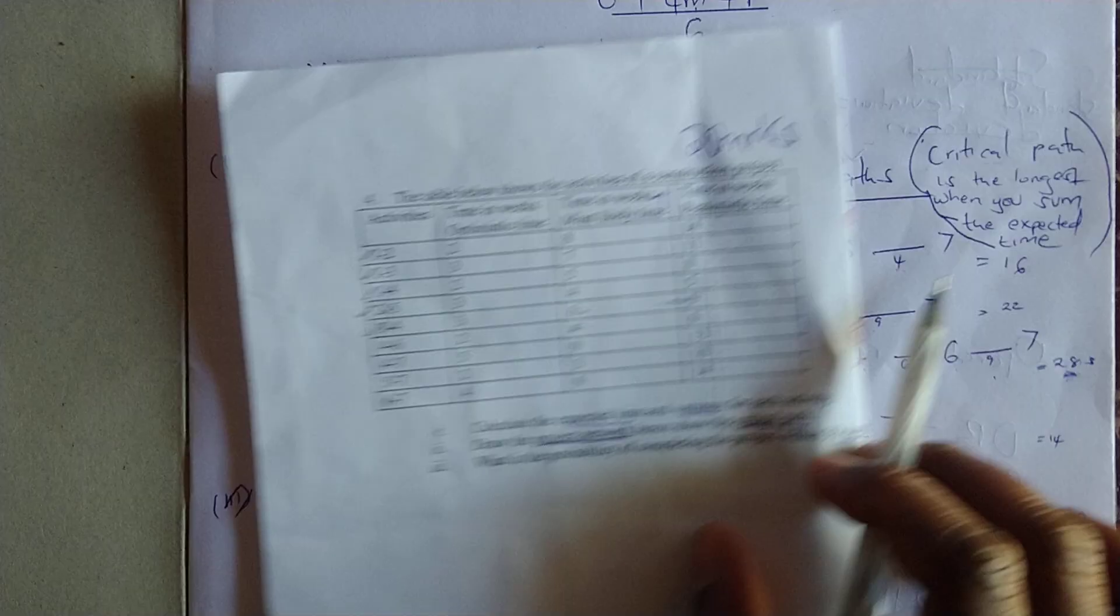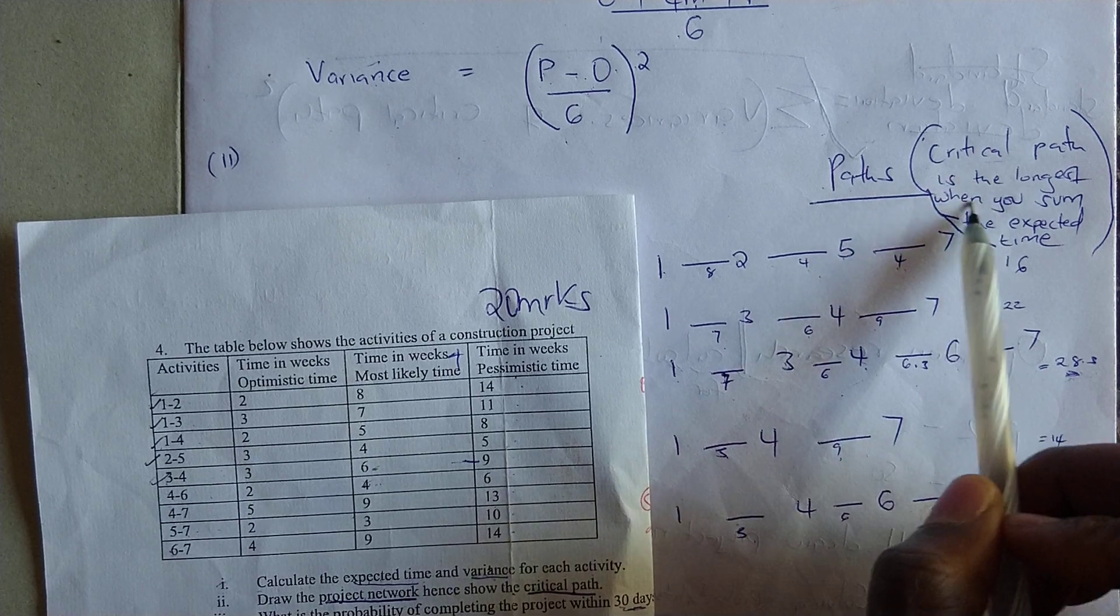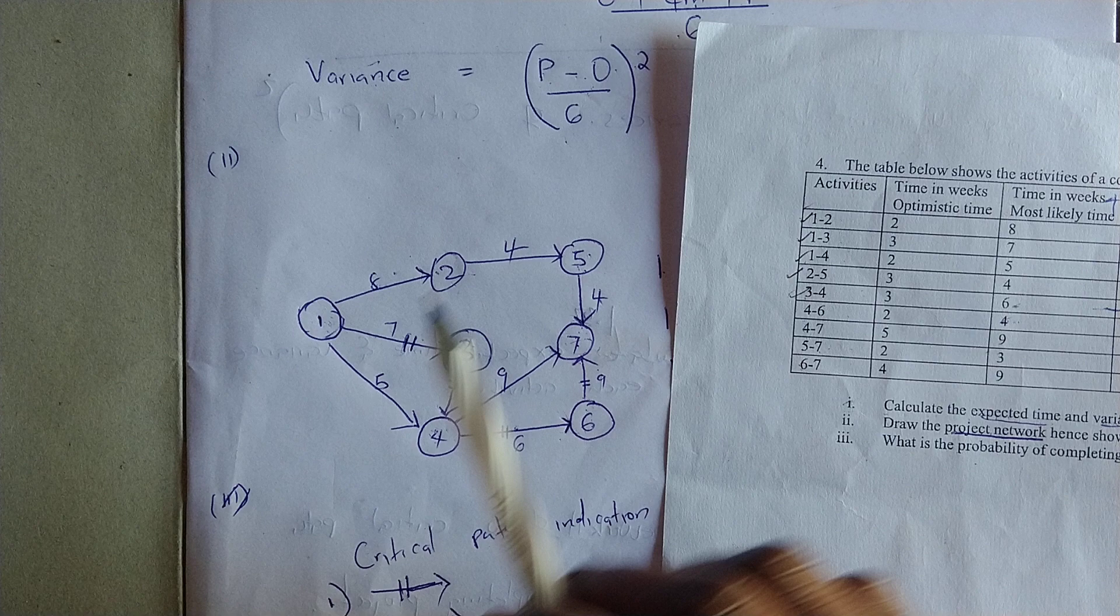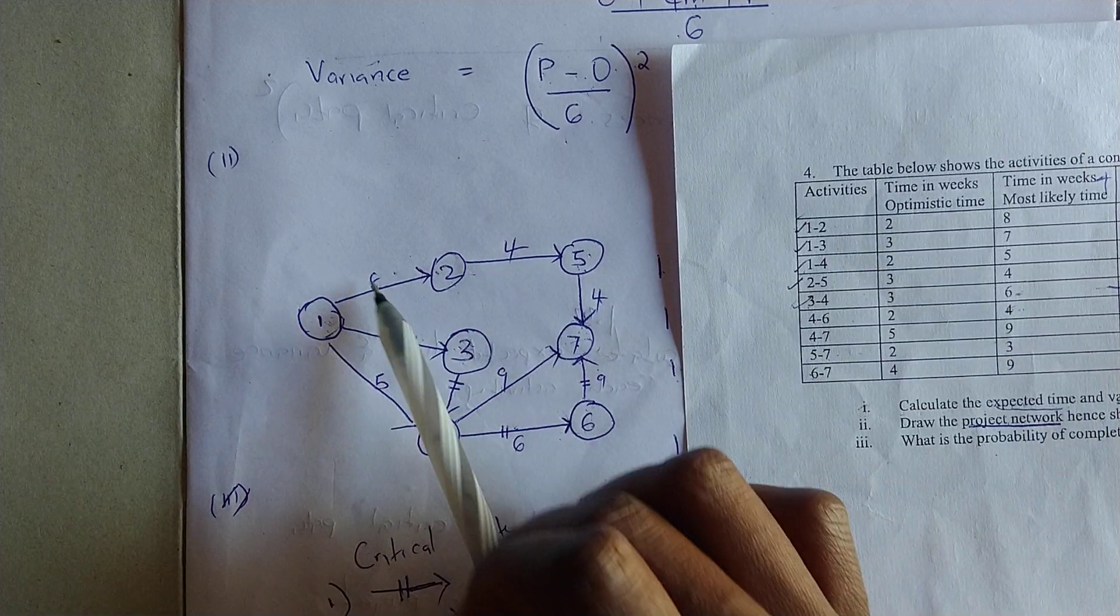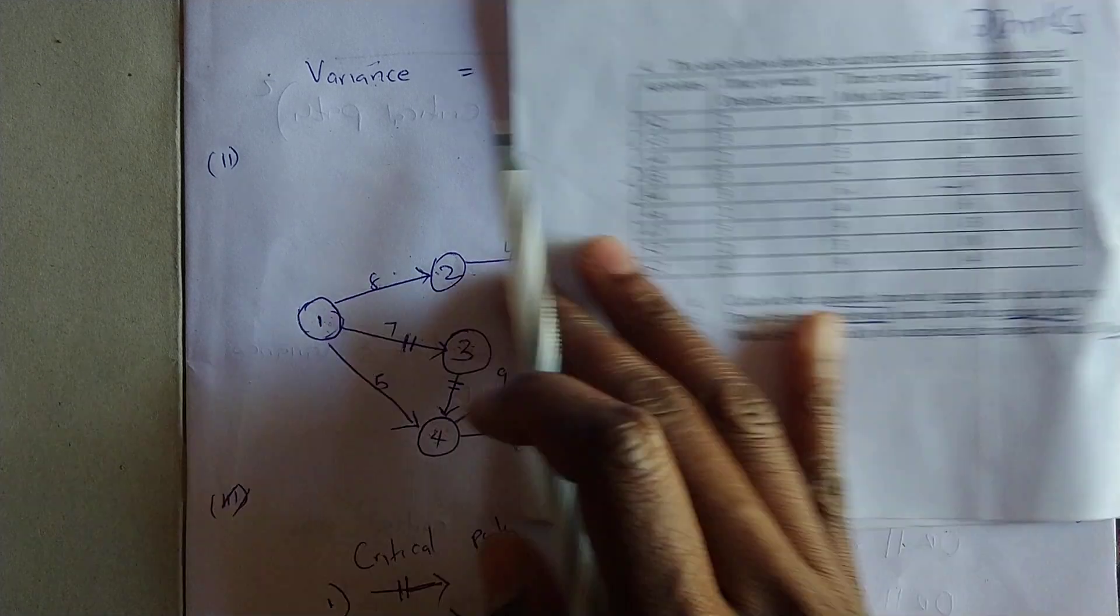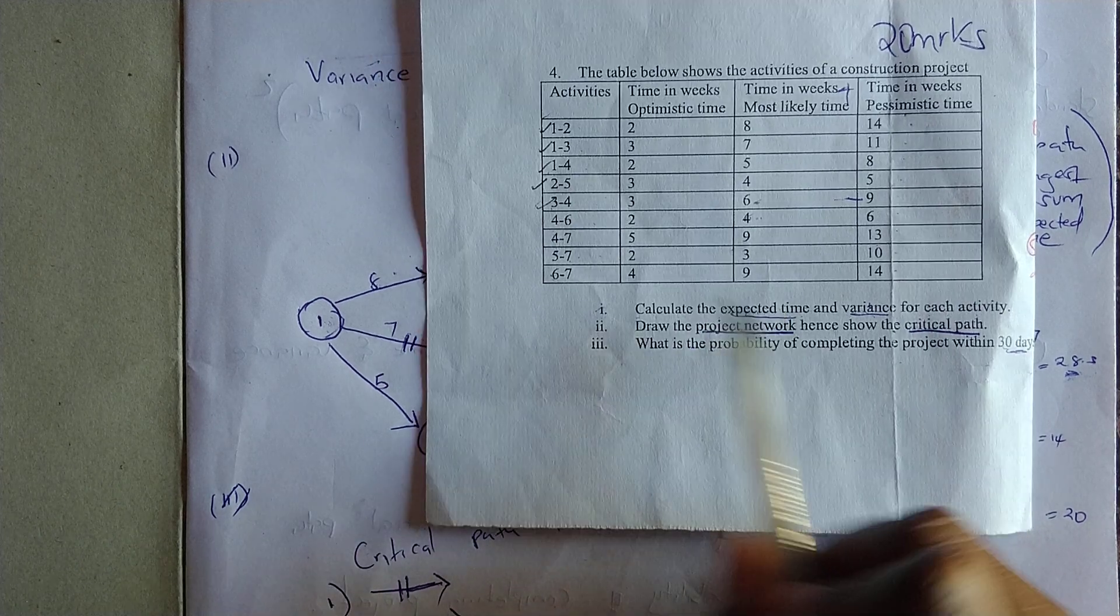The critical path as indicated here is the longest path when you sum up the expected time. I forgot to mention, these eight, seven, and others are the expected time. Please note these are the expected time that we had previously calculated. We're going to indicate it here.